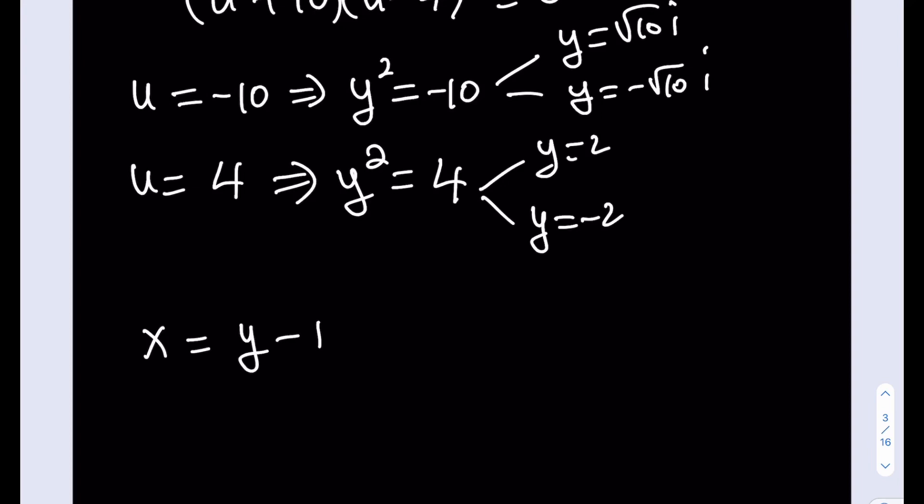x1 is equal to root 10i minus 1, but I'm going to write it as negative 1 plus root 10i. x2, I'm going to write it as negative 1 minus root 10i. As you know, these need to be conjugates. And then what am I going to do? Subtract 1. x3 would be 1, and x4 would be negative 3. That's it. We found all the solutions.